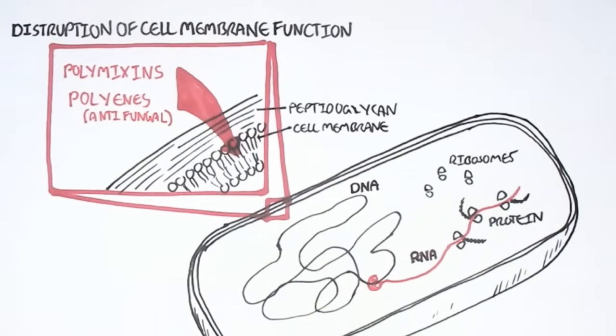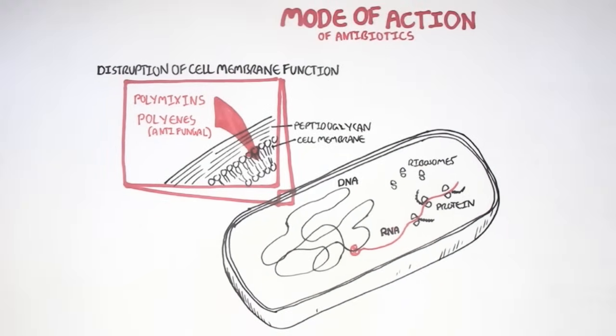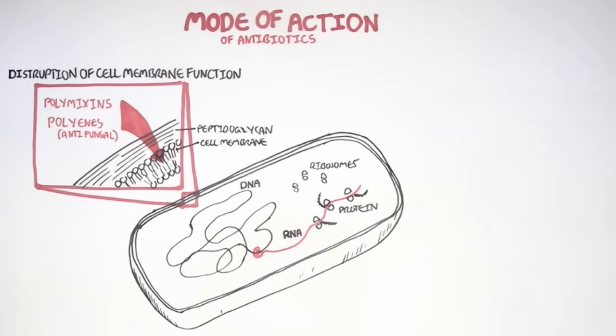Polyenes are actually specifically used against fungal pathogens, but that's just a note to know that you can use polyenes that target cell membranes in fungus. Polymyxins and polyenes target cell membranes.